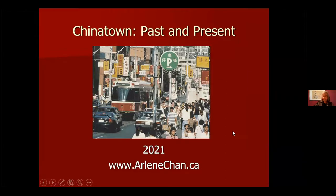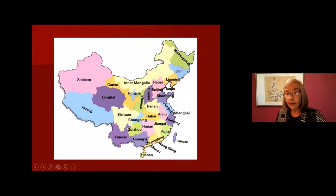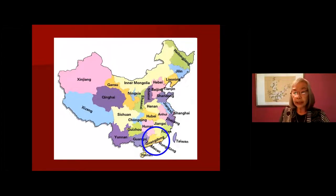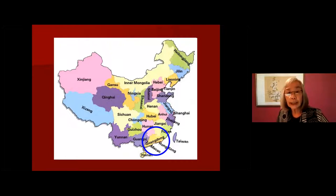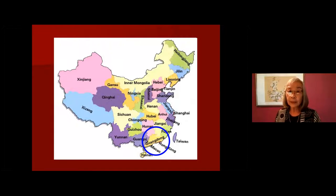So, of course, everything starts in China. This is a map of China, and most of the names you see are the provinces. The one I really want to point out is the province of Guangdong, because most of the early Chinese who came to Canada were from this province.